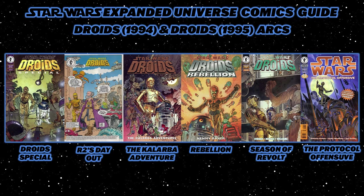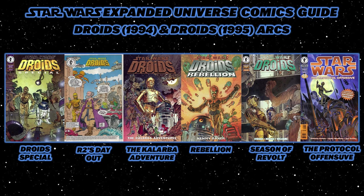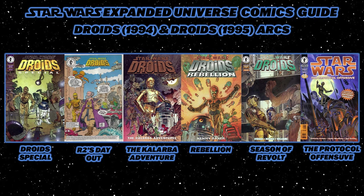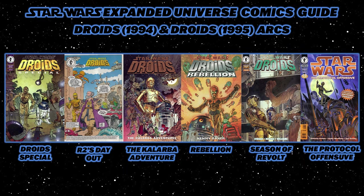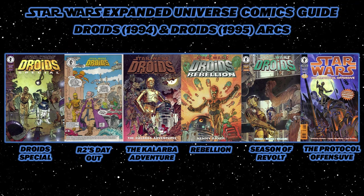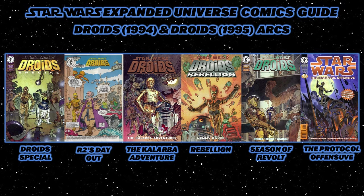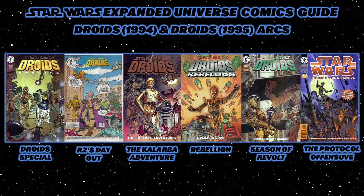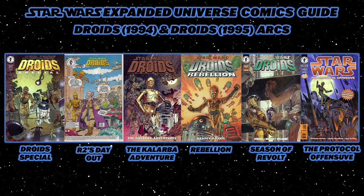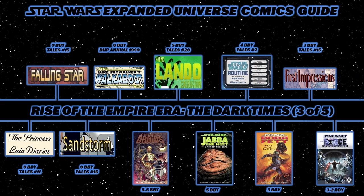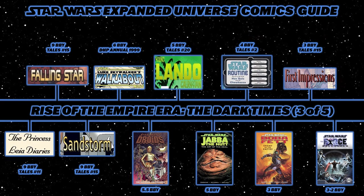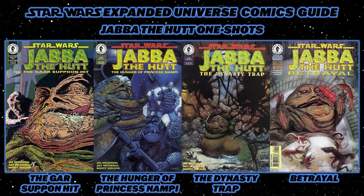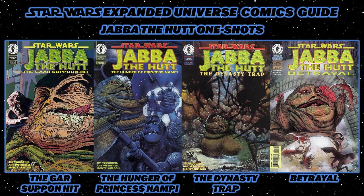Then the Dark Horse Comics Droids series. The chronology begins with the Droids special, then an eight-page comic from Star Wars Galaxy Magazine number 1 called Droids Are Forever, then Droids issues 1 through 6 (The Kalarba Adventures), then the Volume 2 renumbering: issues 1-4 (Rebellion), issues 5-8 (Season of Revolt), and finally the oversized one-shot Droids: The Protocol Offensive. Then Star Wars Tales number 20's Young Lando Calrissian. Then the four Jabba one-shots: The Gar Suppun Hit, The Hunger of Princess Nampi, Dynasty Trap, and Betrayal.